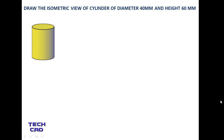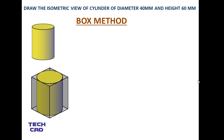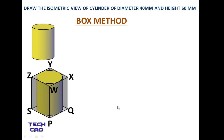This method is known as the box method. It is called the box method because we put our cylinder in between the box — as you can see here, the cylinder is placed exactly in between the box. So you have to make this box first, then you make the cylinder. This is the nomenclature of the box, so start making the isometric view of this box first.